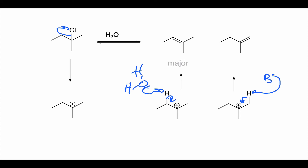The reason the internal alkene is the major product and the external alkene is the minor product is Zaitsev's rule — more substituted bonds are thermodynamically more stable. The alkene on the left is trisubstituted (three R groups surrounding it), while the alkene on the right only has two R groups (an ethyl and a methyl). Three R groups versus two — the trisubstituted wins; it's thermodynamically more favorable and is the major product.